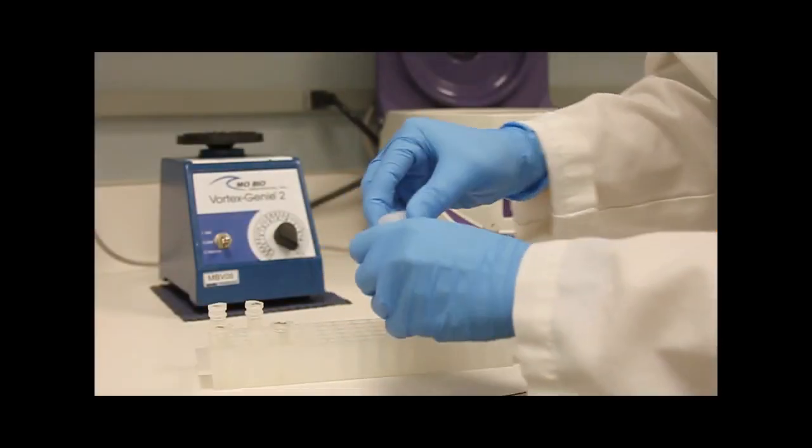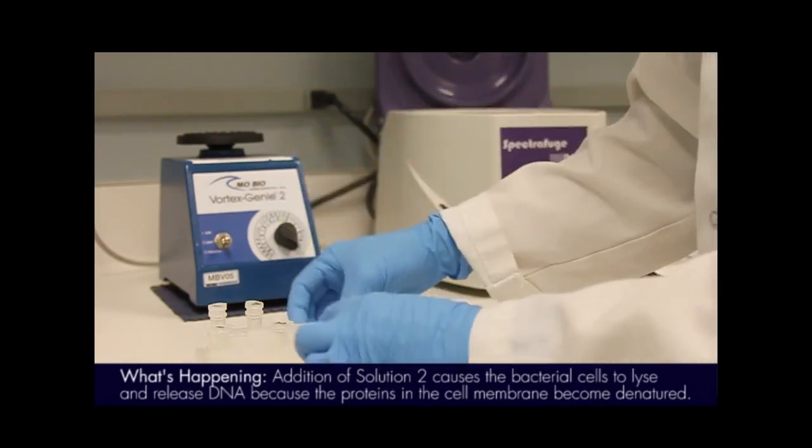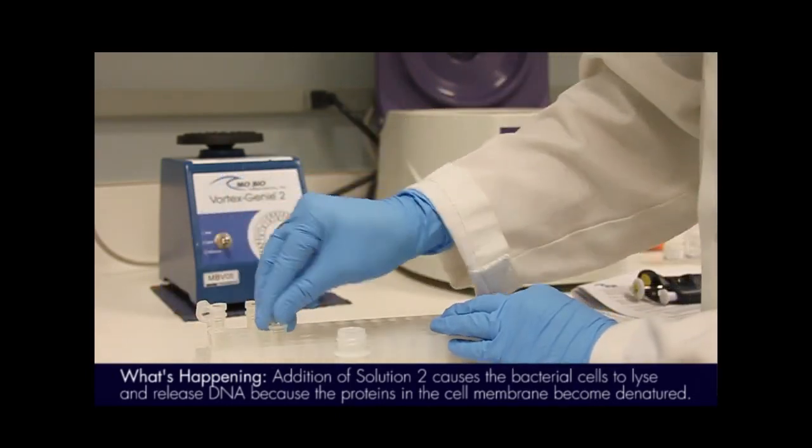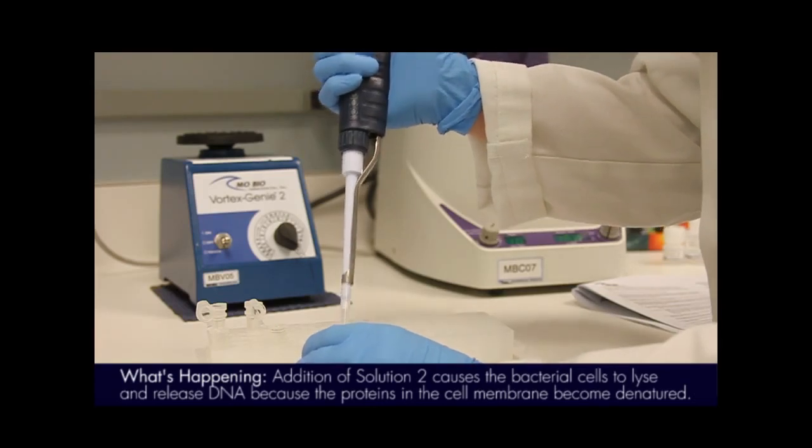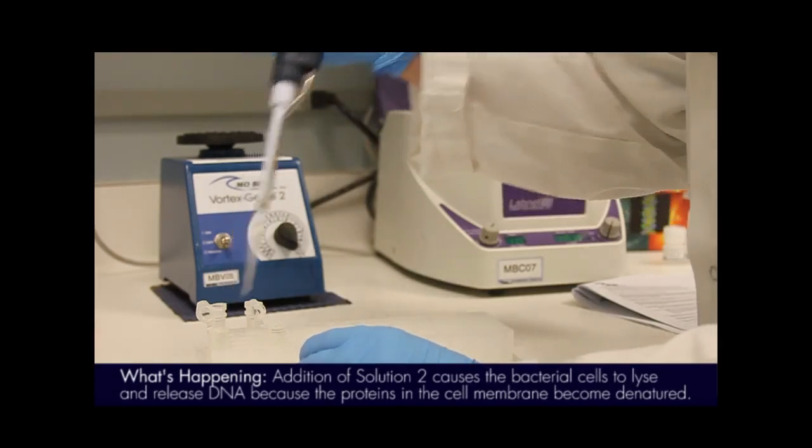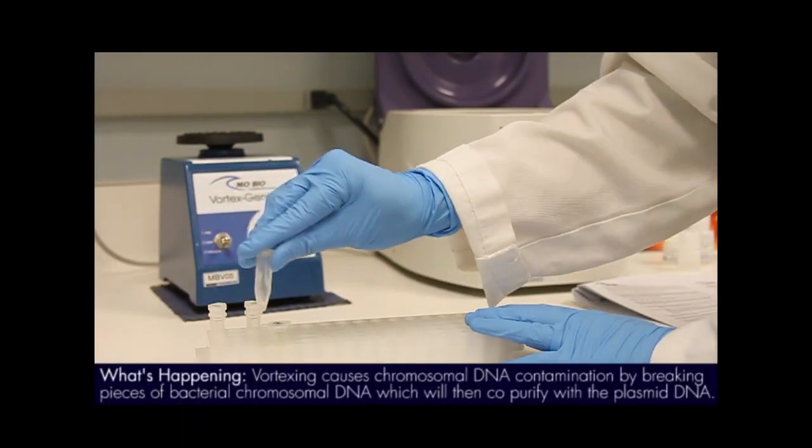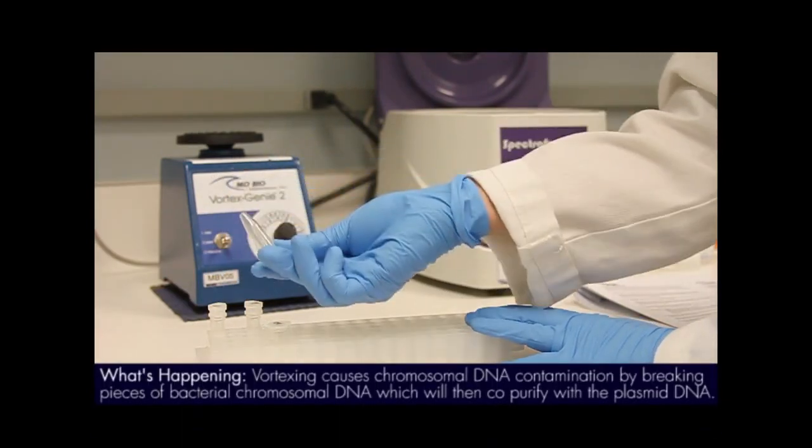Next, we will add solution 2 to the cell suspension to lyse the bacterial cells. Gently invert the tubes up to 8 times to mix. Do not vortex at this step.